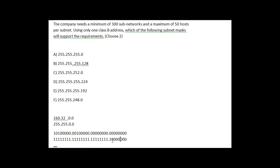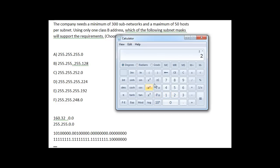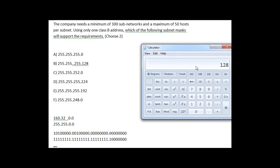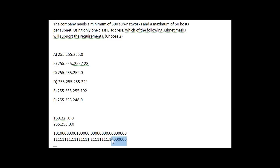What about the zeros? Those represent the hosts. With seven bits of hosts, 2 to the 7th power equals 128 hosts — that's plenty if we need a maximum of 50 hosts. If we borrowed one more bit, we'd have 64 hosts per subnet. If we borrowed yet another, we'd have only 32 hosts — 2 to the 5th power — which would not be enough hosts.